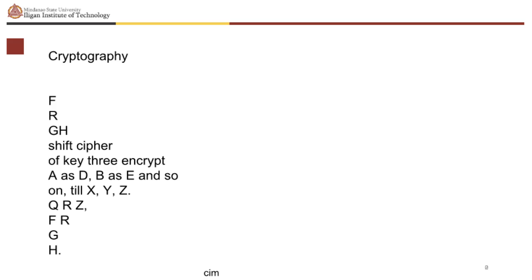The following mathematical Fib on cryptography was written by Catherine I. Merka: 'Cryptography. F. R. G. H. Shift cipher. Of key three and crypt. R as D, B as E, and so on. Till X, Y, Z, Q, R, Z, F, R, G, H.' This mathematical Fib poem was written when the topic of cryptography was discussed in class. Students were asked to decrypt this mathematical Fib. Can you decrypt the poem?